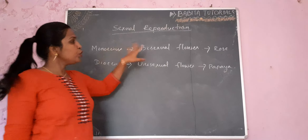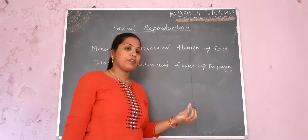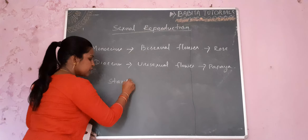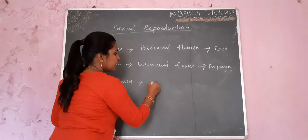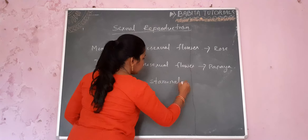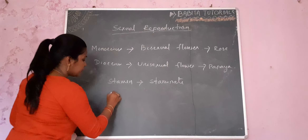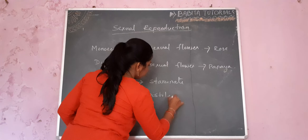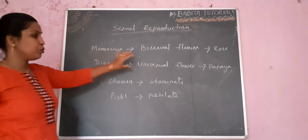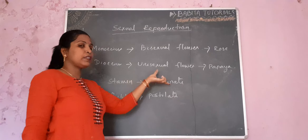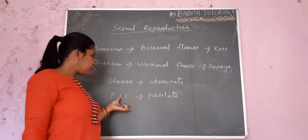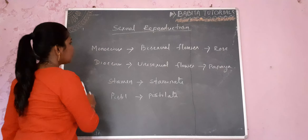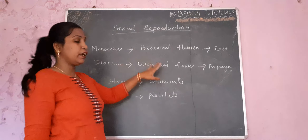Monoecious plants have both male and female reproductive parts in the same flower, known as a bisexual flower. If the flower has only stamens, the male reproductive part, then that type of flower is known as staminate. If only the pistil is present, then that type of plant is known as pistillate. In the case of dioecious or unisexual flowers, if only stamens are present it is staminate, and if only the female reproductive part is present it is pistillate.